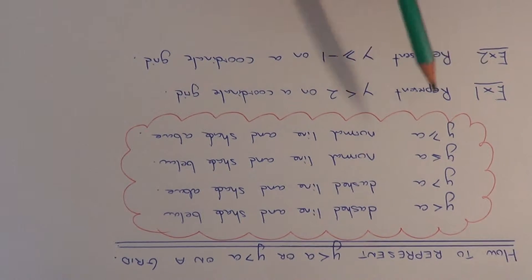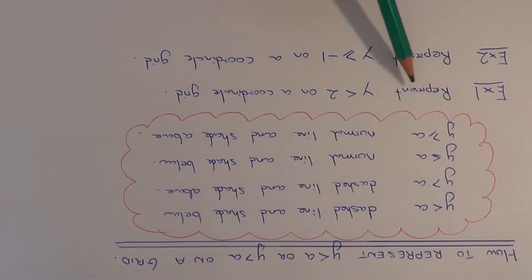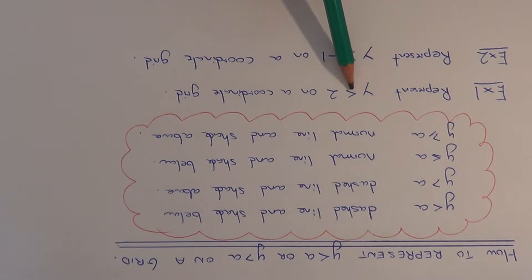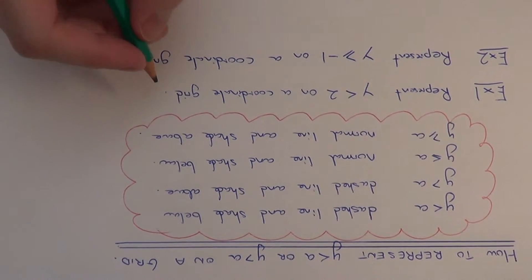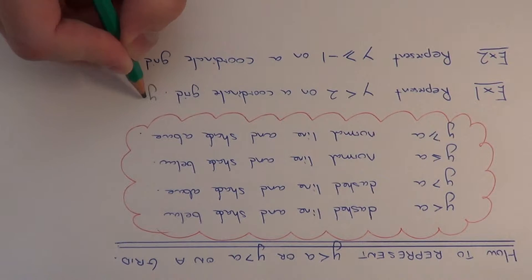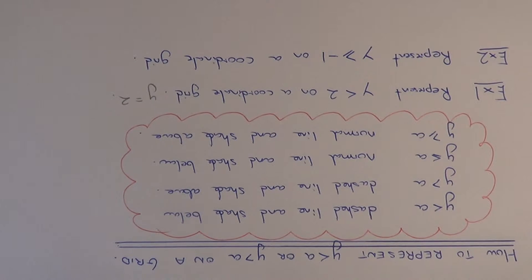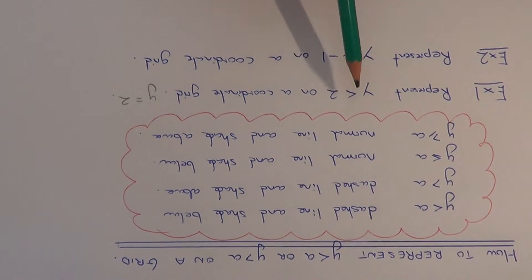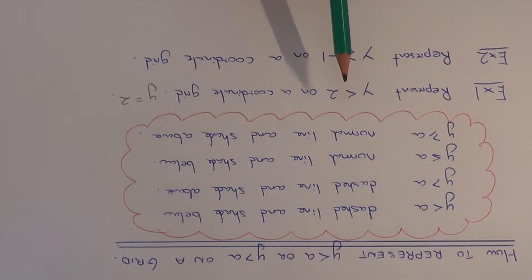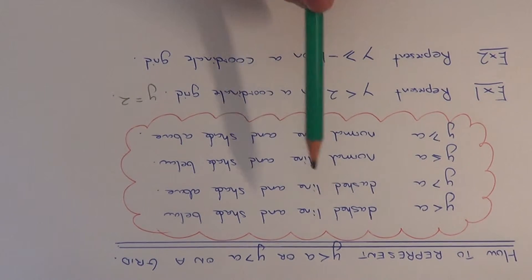So let's have a look at the two examples. For example one, we need to represent y is less than 2 on a coordinate grid. The first thing we need to do is think about how we draw the line y equals 2 — this is just a simple horizontal line going through the y-axis at 2. And since it's less than, we need to draw a dashed line.